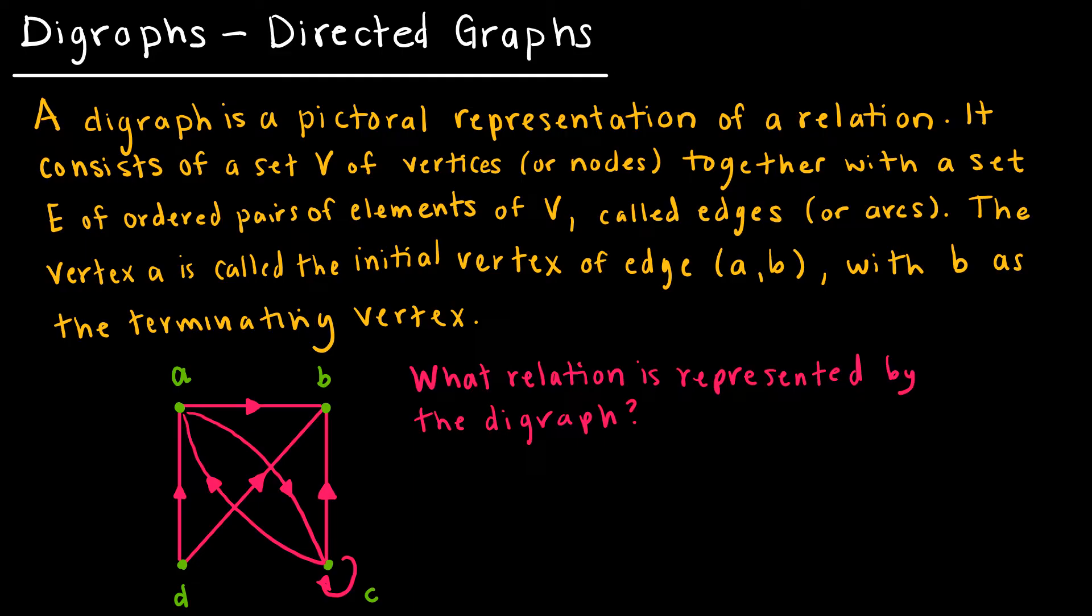A digraph is a directed graph. It's just a pictorial representation of a relation. It's directed, which means it gives me arrows that go in the direction that shows me the relation. So if A has an arrow to B, then A, B is in my relation. And that's all it is. V is the set of vertices, which are the points. And E is the set of the edges that connects them. All of the green points are your values that are in your relation, and the arrows tell you which values are connected to which other values.